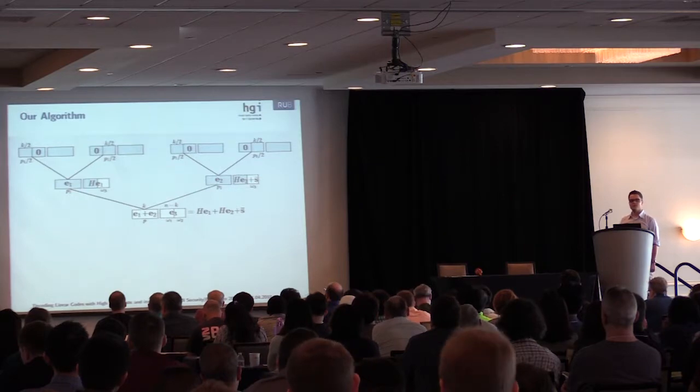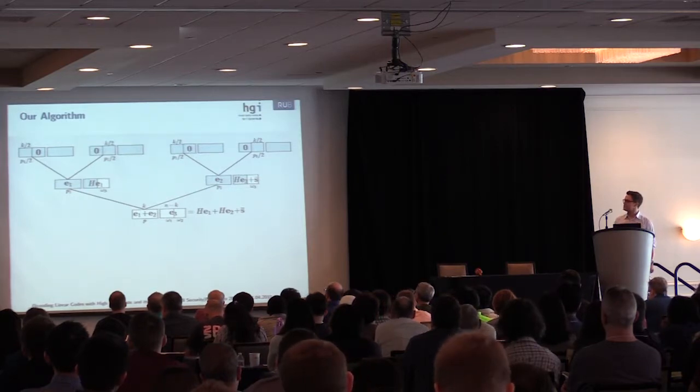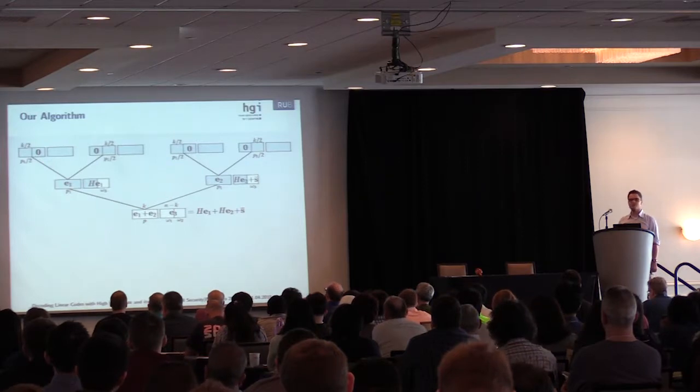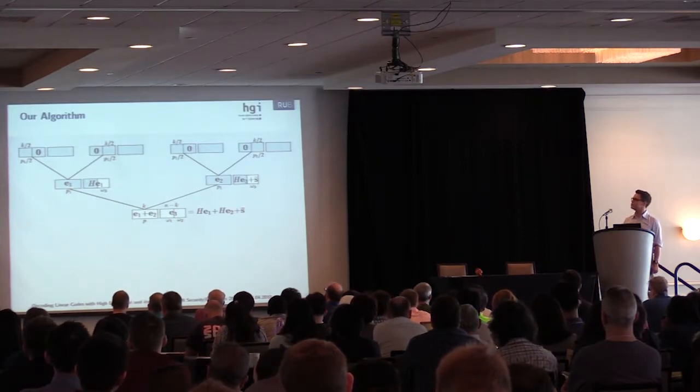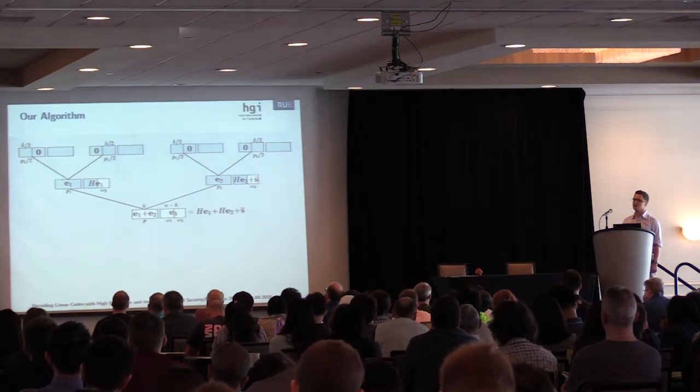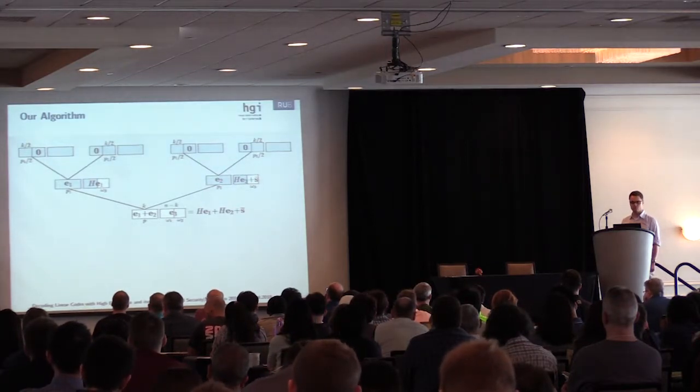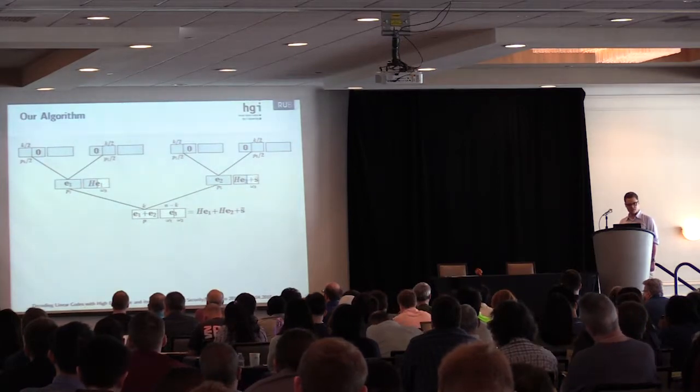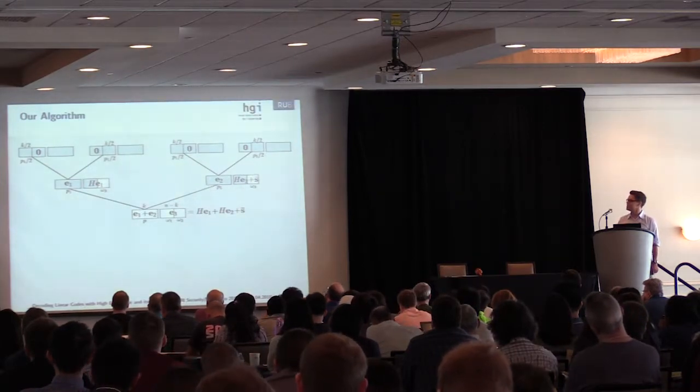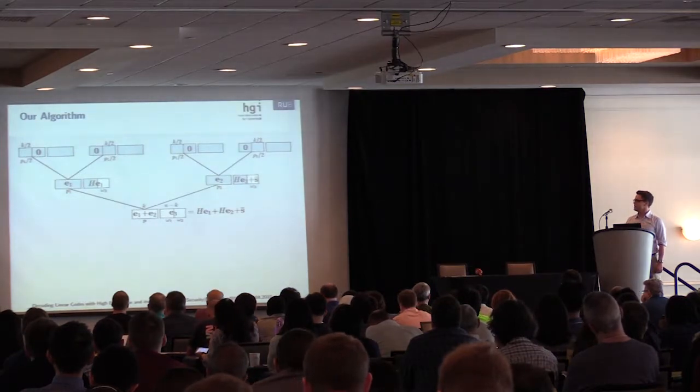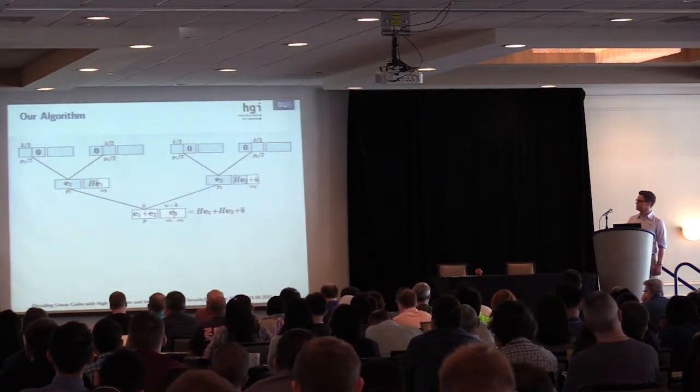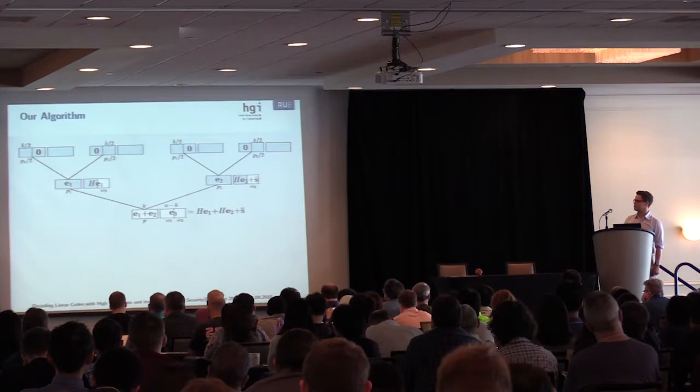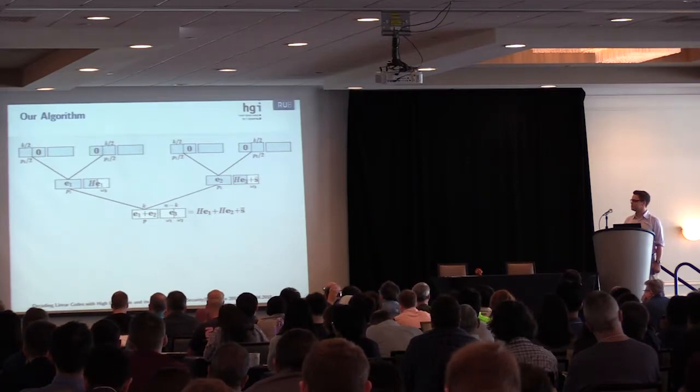Next step is we add the meet-in-the-middle technique by Stern to construct, for example, e1. Now e1 is constructed from two vectors of length k over 2 and weight p1 over 2. If we merge such two vectors, they automatically have weight p1 and length k. We do the same for the vector e2. As you can see, this gives a binary search tree structure as in BJMM.